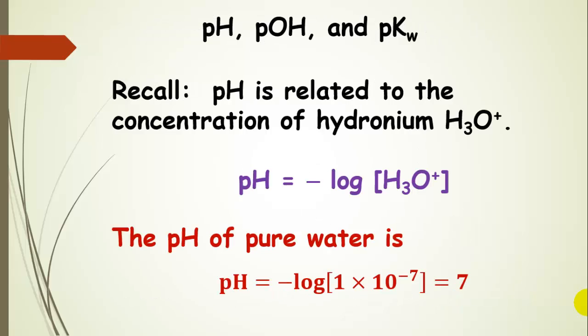pH is related to the concentration of hydronium in solution. We take the negative log of that concentration to get pH. So the pH of pure water, plugging in the hydronium concentration, is 7.